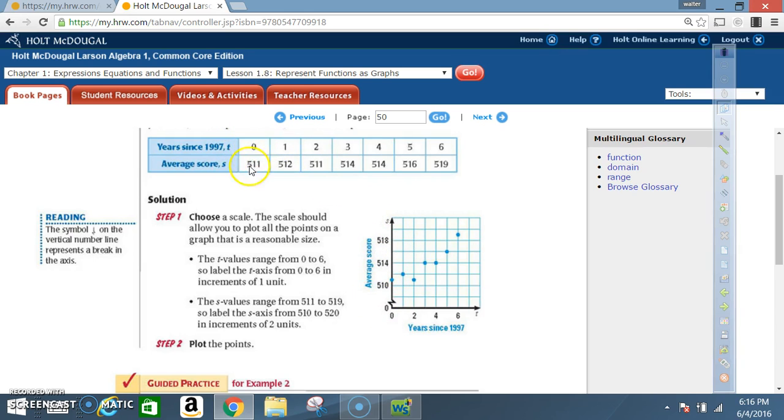And then from there, you just simply plot the points. So when x is 0, y is 511. So when x is 0, y is 511. When x is 1, that's 1, y is 512. When x is 2, y is 511. Notice how both of these are in the same spot, when x is 0 and when x is 2. And then you will simply go on from there.